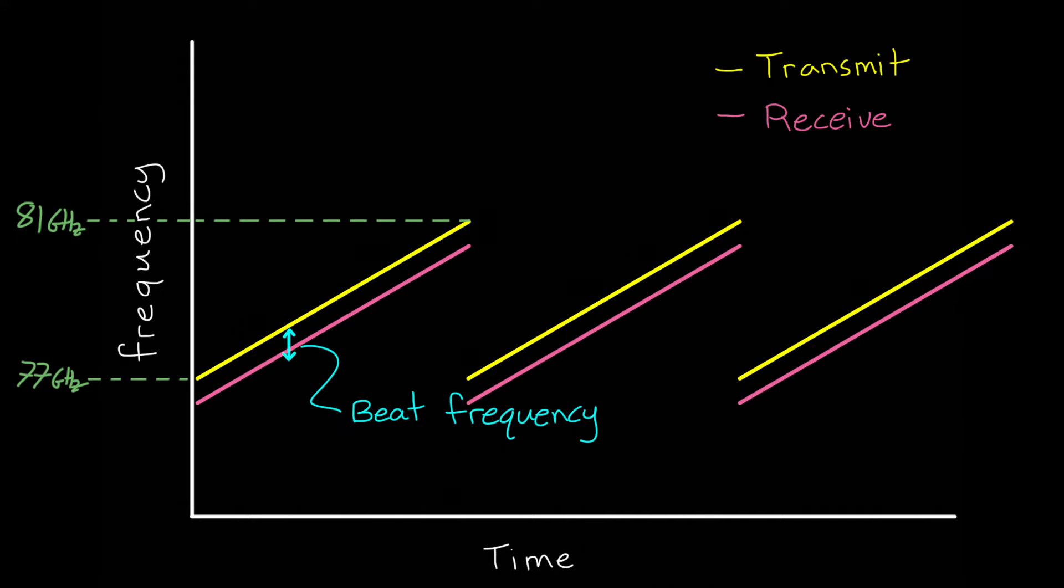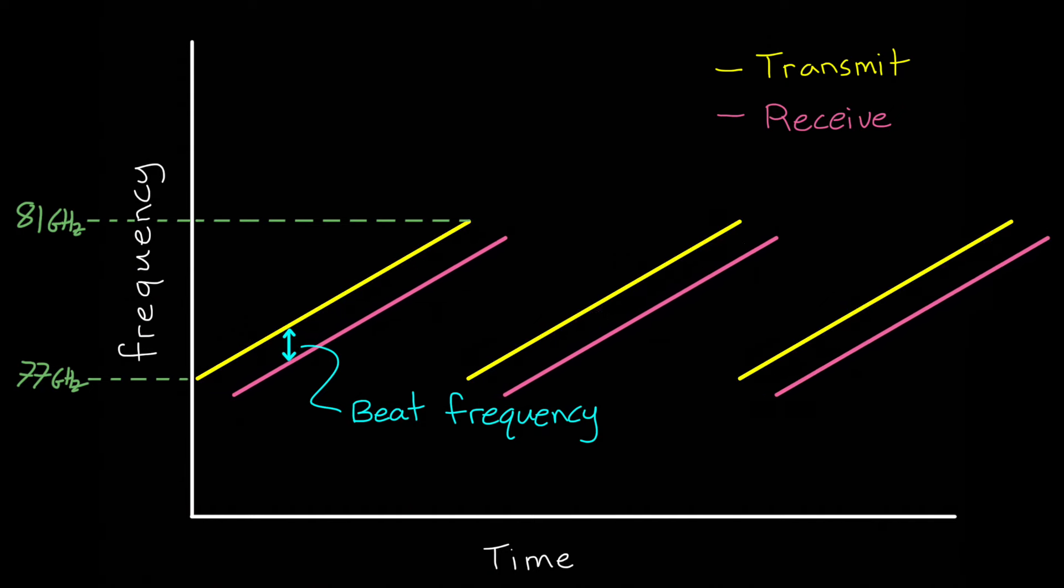And worse than that, we can't tell if there's a combination of Doppler and a time shift. So we have two unknowns, Doppler and time delay, and just this single beat frequency. Another way to visualize this is on a range Doppler chart. For a single beat frequency, the object could have zero range and some Doppler, zero Doppler and some range, or a combination of the two. So the actual parameters of the object fall somewhere on this line. And in order to resolve these two unknowns, we essentially need a second beat frequency. And there are many ways to accomplish this.